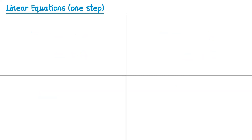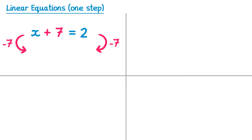Now I'm going to show you 4 more examples using these strategies that give you slightly different results. For this first one we have x plus 7 equals 2. We have a plus 7 on the left hand side that we need to deal with, so we're going to subtract 7 from both sides. On the left hand side the 7s will cancel leaving us with x, and on the right hand side we need to do 2 take away 7, which gives a negative number: negative 5. So this equation gave us a negative answer.